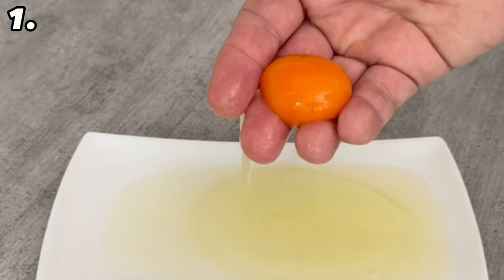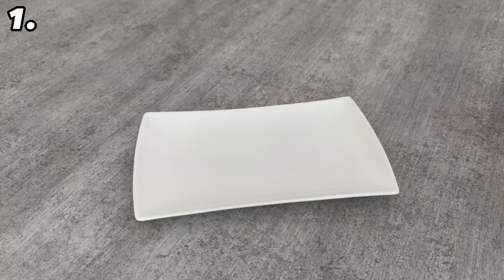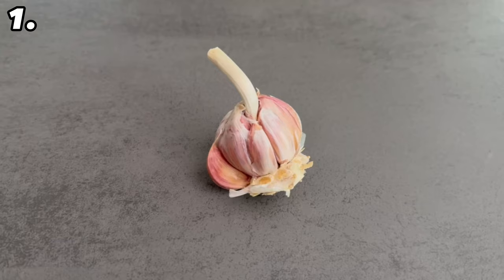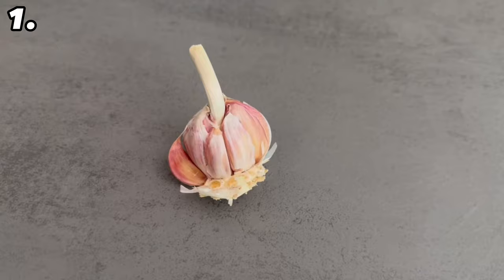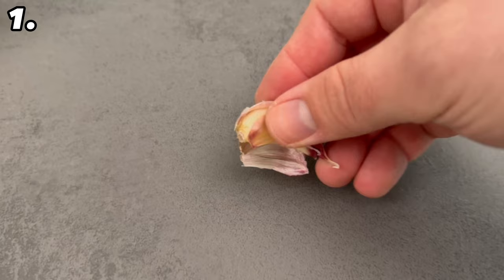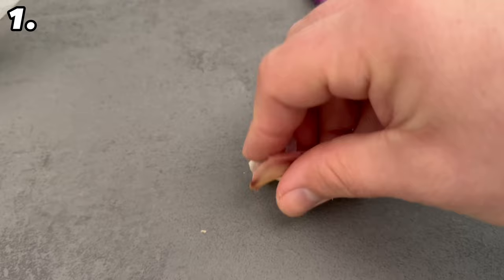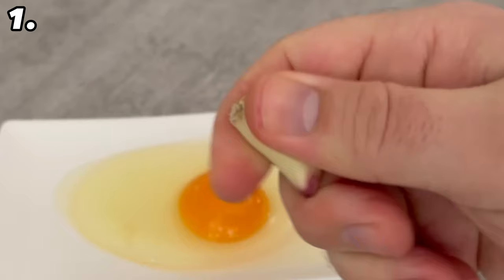In the first trick I'll show you a pretty genius way to separate egg yolks from the egg white, because there's a really simple trick for this that hardly anyone knows. All you need is a clove of garlic. If you open this and rub your fingers on the garlic clove, then you'll have the ability to pick up the egg yolk directly with your fingers.